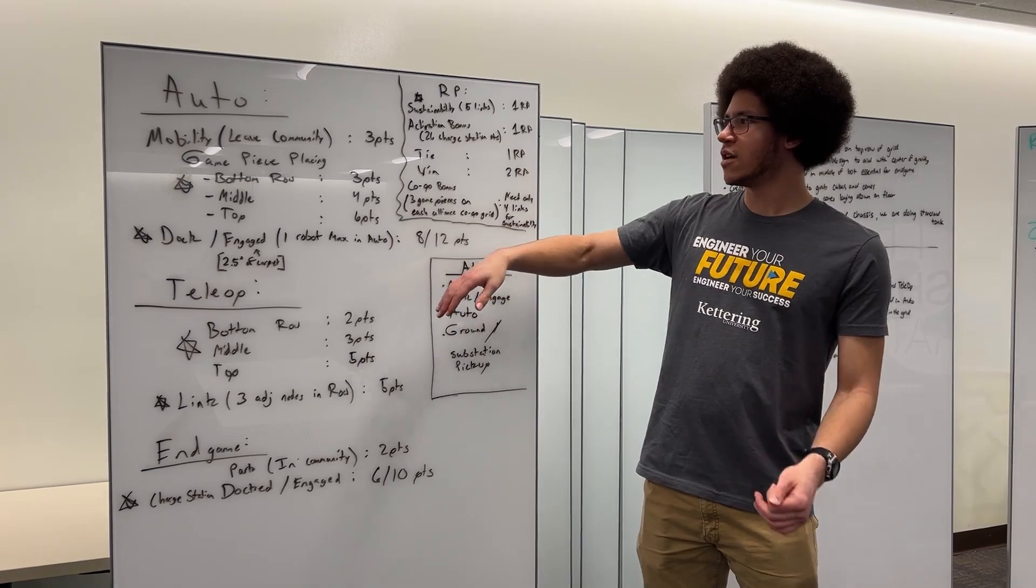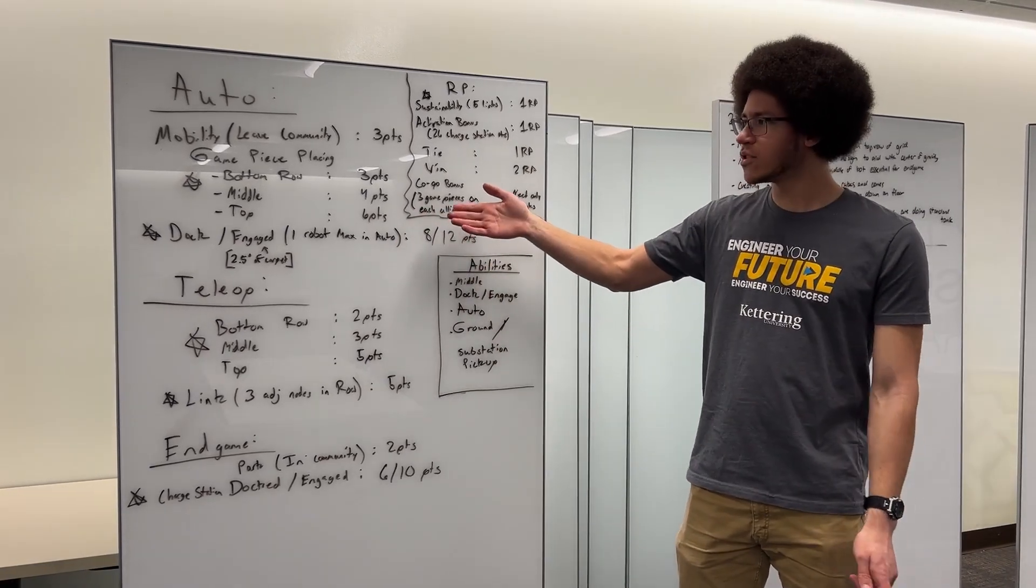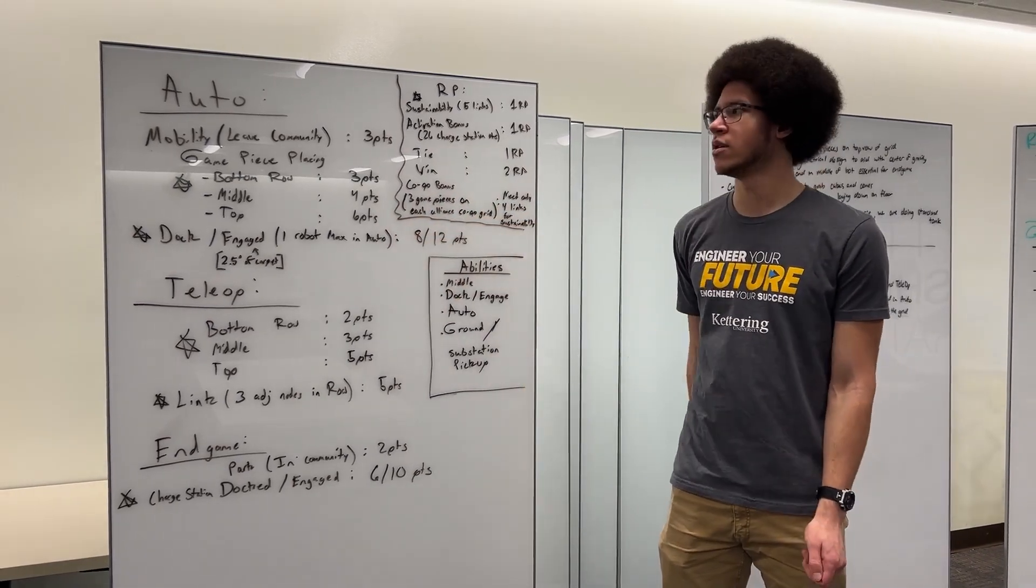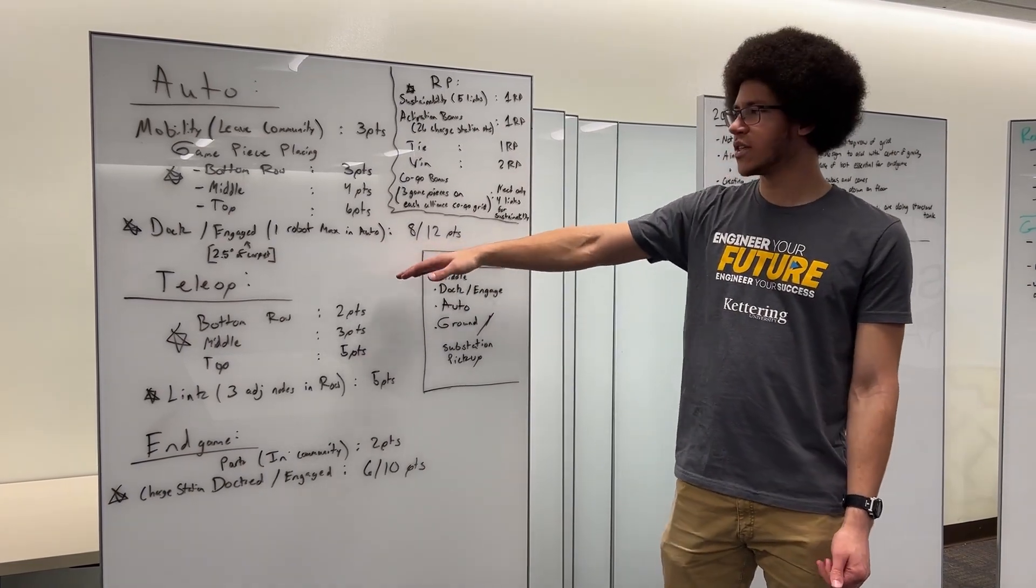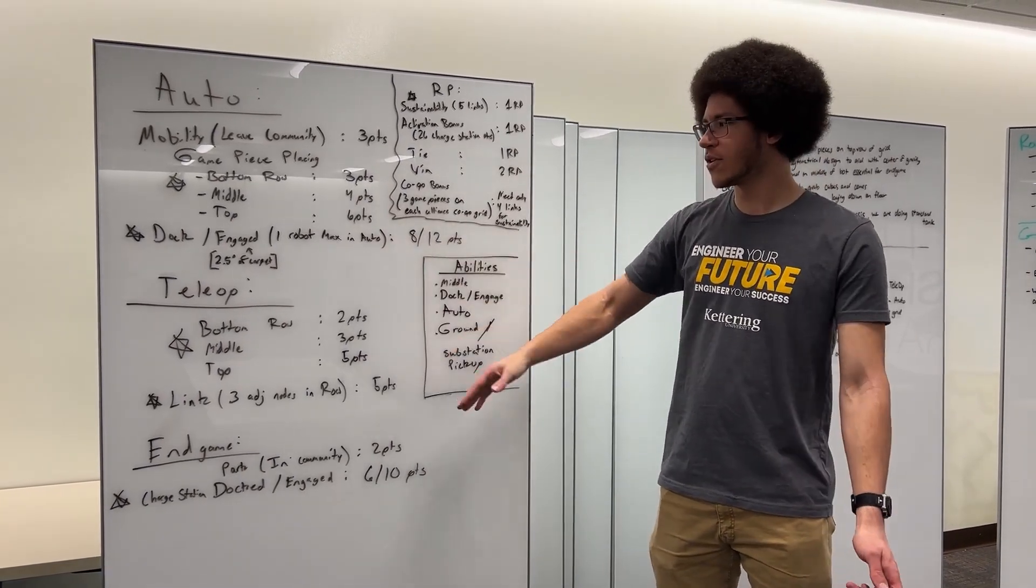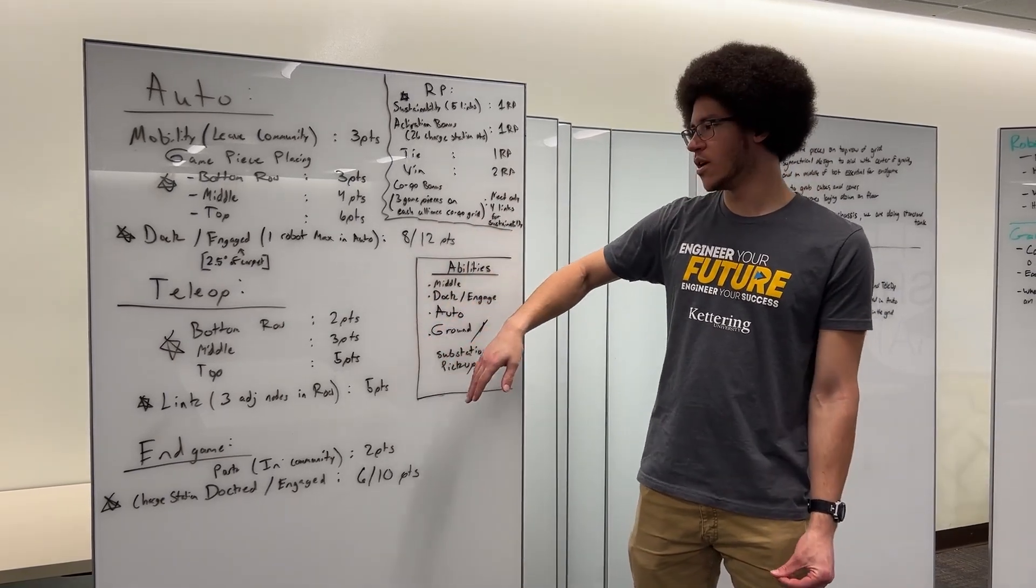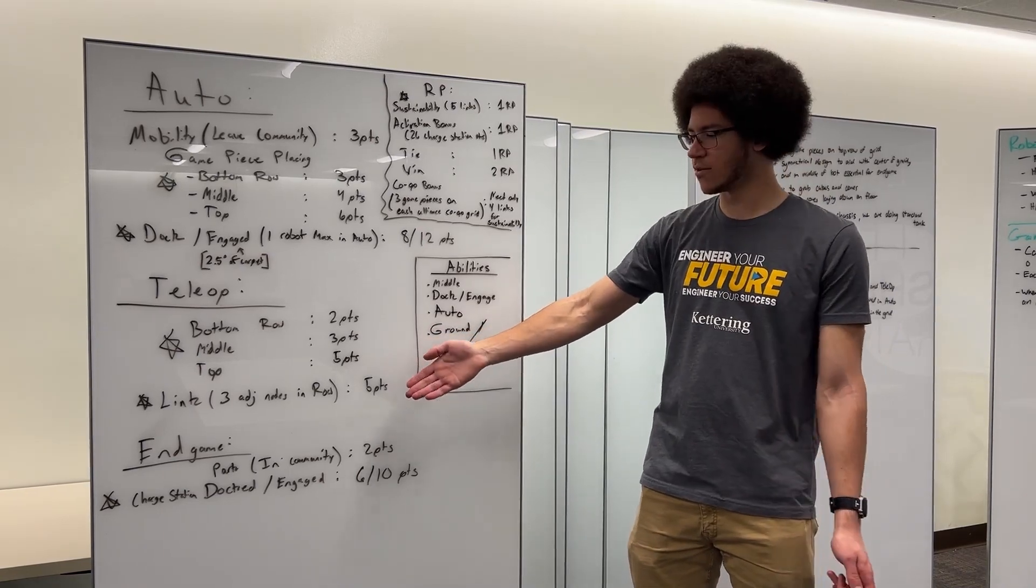For autonomous, we're thinking to be able to score bottom and middle. There's still good value points there but doesn't have quite the complexity that top scorer will require. And then on top of that we're planning on to dock and engage. We're hoping that we'll be able to get it level fairly easily to get the 12 points. And then in teleop we're going to do a series of scoring bottom and middle in hopes to get as many links as possible to get the five points.